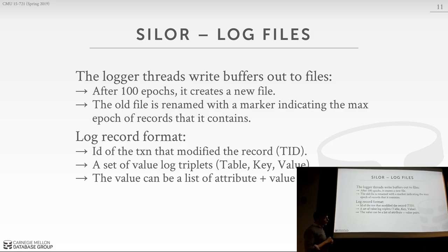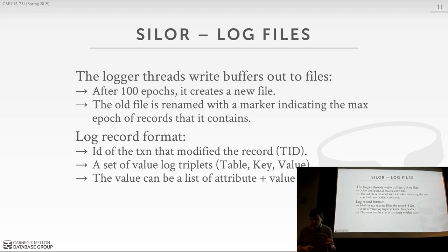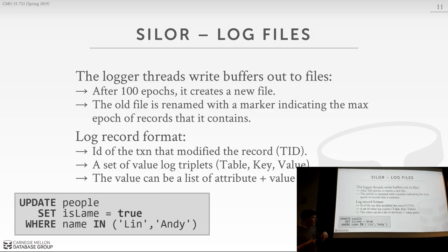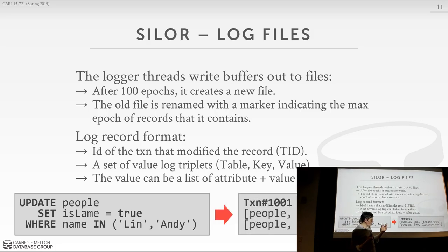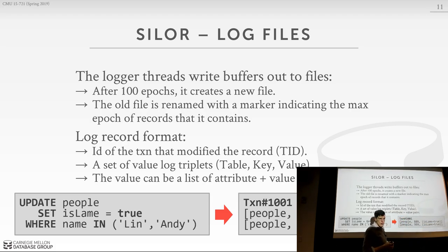Each log record is a triplet containing: the name of the table that was modified, some record key or tuple ID to uniquely identify the modified tuple, and the value as a list of attribute-name-to-new-value pairs. For example, if we have a people table and want to set an is_lane flag for both Lin and myself, transaction 1001 would log: people table, unique identifiers for both records, and the attribute-to-new-value mapping. This is the redo record — we don't care about undo.